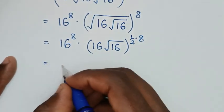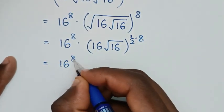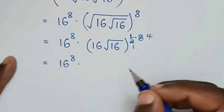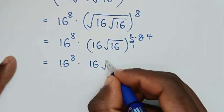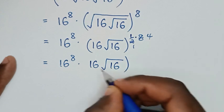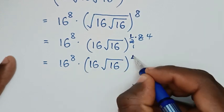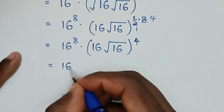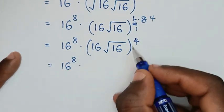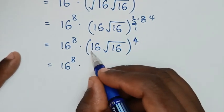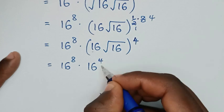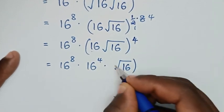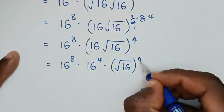Then it will be equal to 16, times here — by 1, this by 4 — so it will be 16, square root of 16, then bracket, this power of 4. Then it will be equal to 16 power of 8, times — we'll take power of 4 inside the bracket — so it will be 16 power of 4, times this square root of 16, bracket, this power of 4.